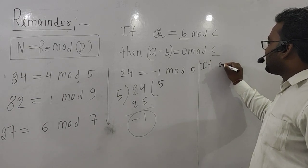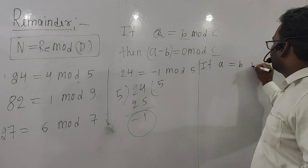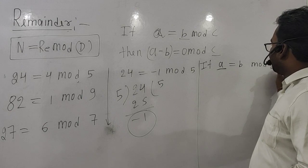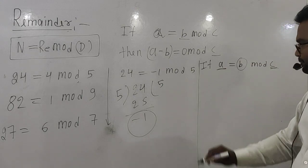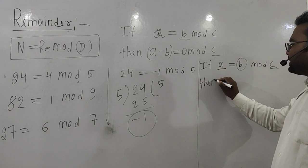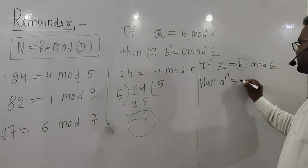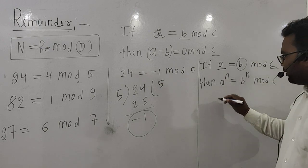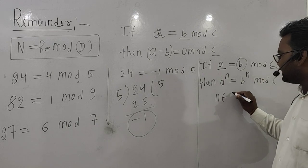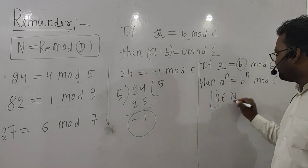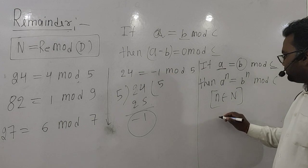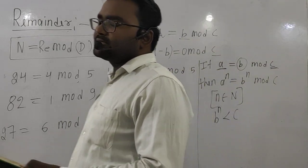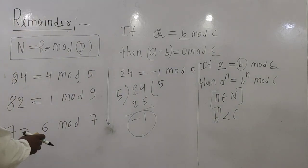Rule 1: If a ≡ b (mod c), then a^n ≡ b^n (mod c). An important condition: n must be a natural number, and b^n must be less than c.